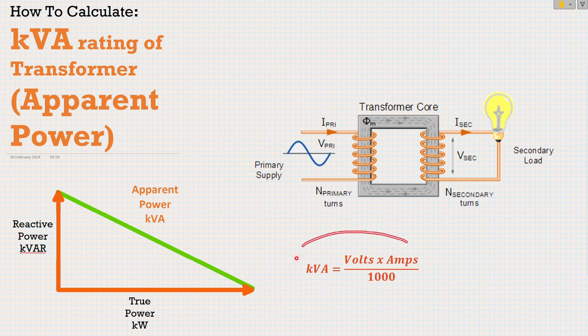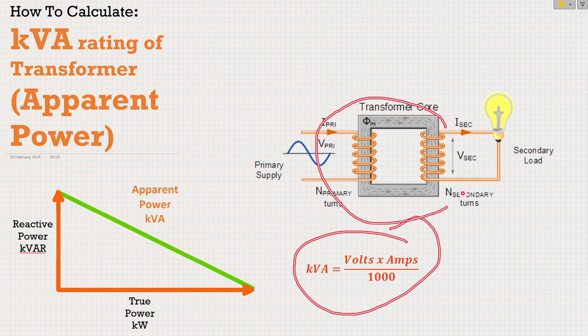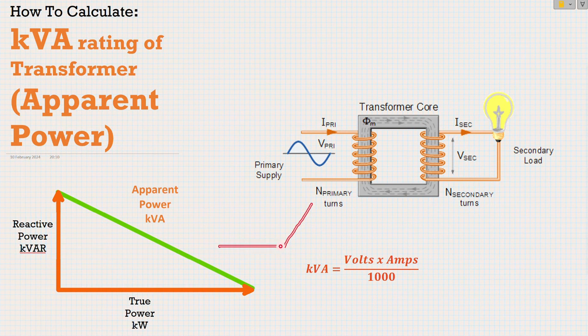We're going to look at this triangle, we're going to look at this formula, and we're going to look at this actual transformer, and we're going to link them all together so that it makes sense. So let's ask ourselves what we're actually calculating. What is apparent power and what is the kVA rating of a transformer?